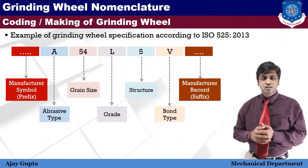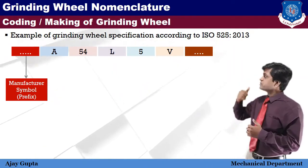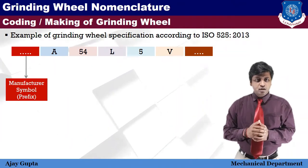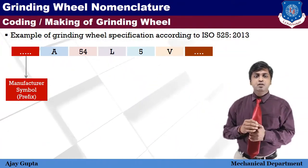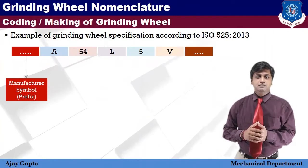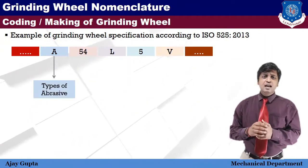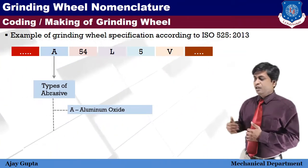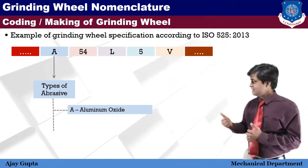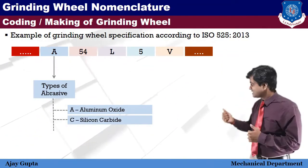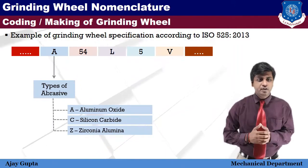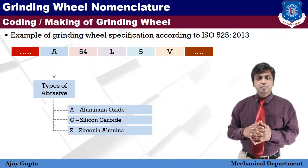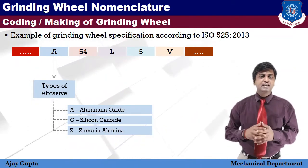The first character is the manufacturer symbol prefix — it is optional and its assignment depends entirely on the manufacturer's choice. The second is abrasive type, represented by an alphabet symbol: 'A' stands for aluminum oxide, 'C' stands for silicon carbide, and 'Z' stands for zirconium aluminum. Each abrasive has a special application depending on whether the material to be ground is ferrous or non-ferrous.